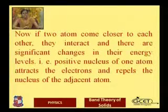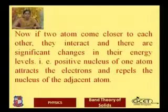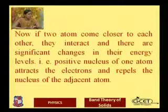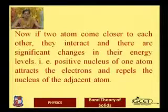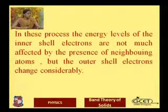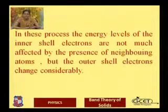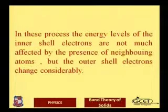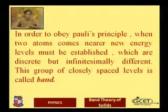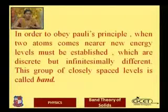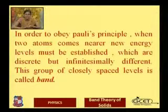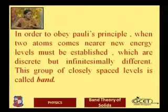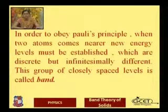There are significant changes in the energy structures in order to obey Pauli's exclusion principle. The positive nucleus of one atom attracts the electrons and repels the nucleus of the second atom. The inner electrons are not much affected, but the outermost electron changes its energy level considerably. When two atoms come nearer, new energy levels are established which are discrete but infinitesimally close, and this group of closely spaced levels is called a band.